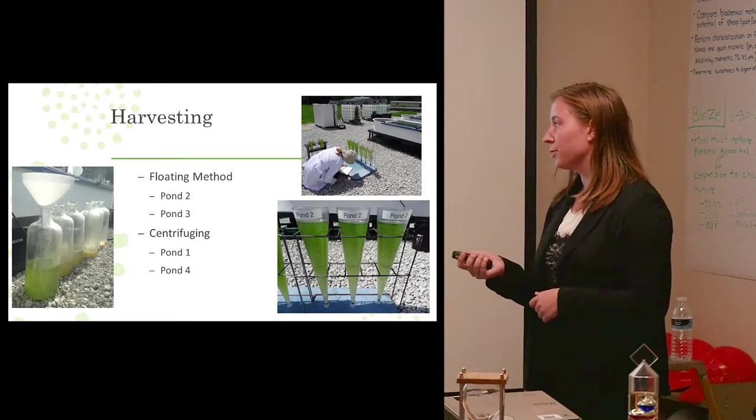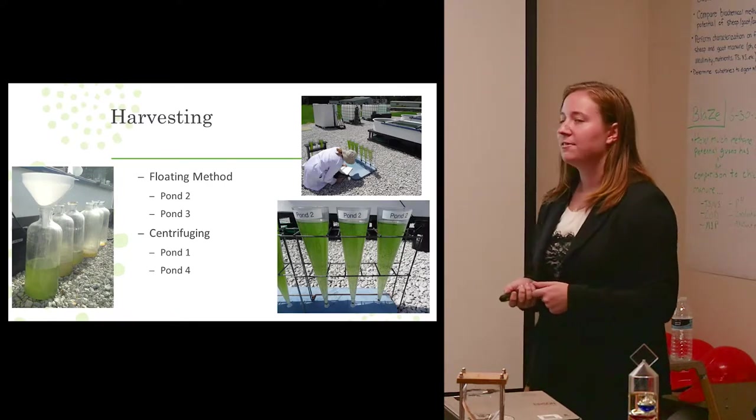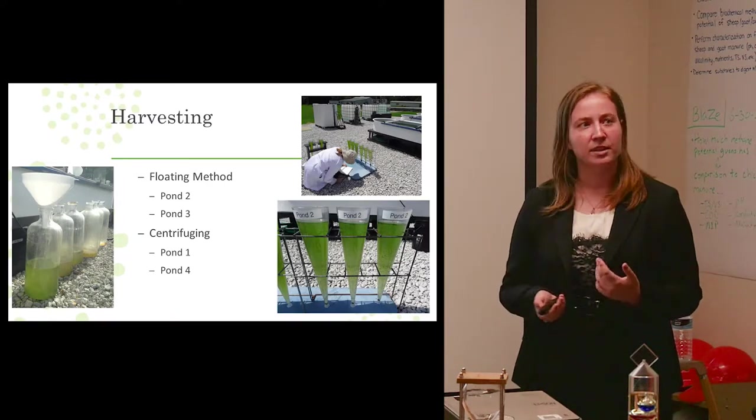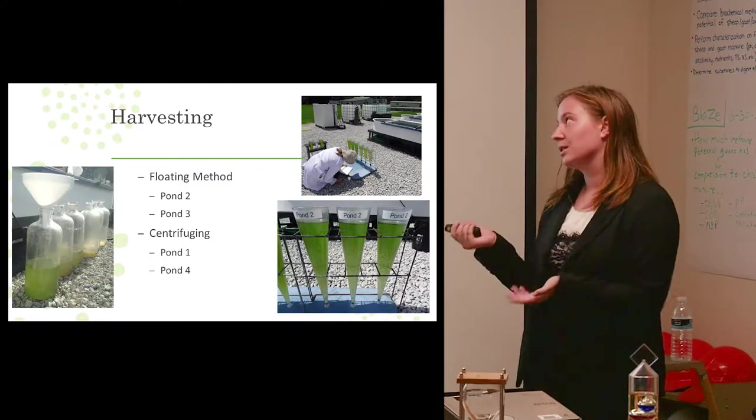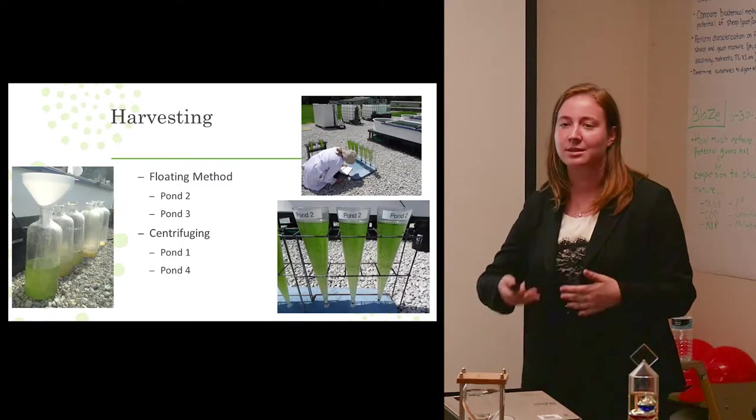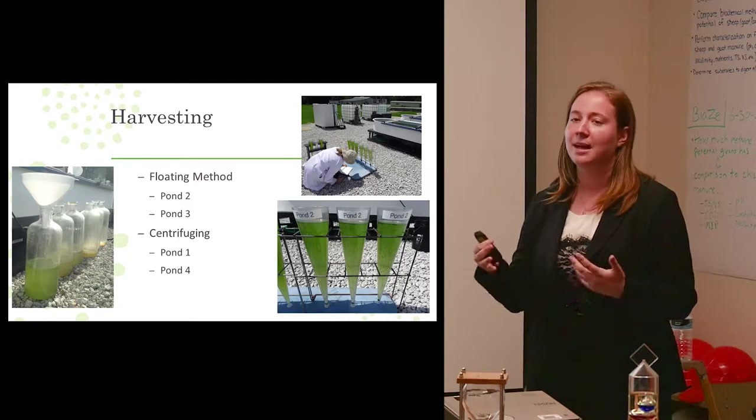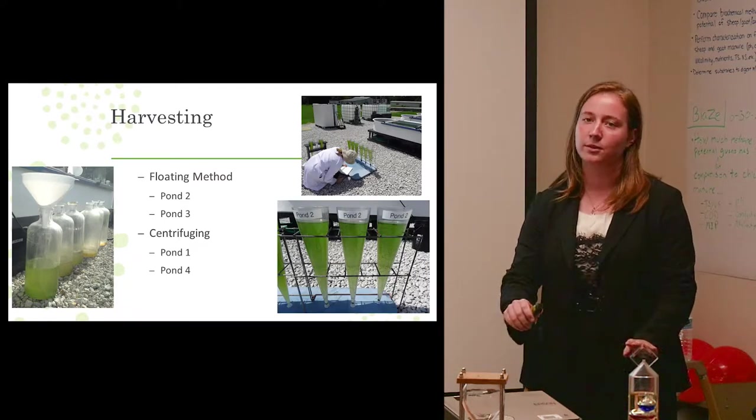However, for ponds one and four, we found that they didn't flocculate as well and this method wouldn't work. So instead of using this floating method because we weren't seeing that production and that flocculation, we solely centrifuge.